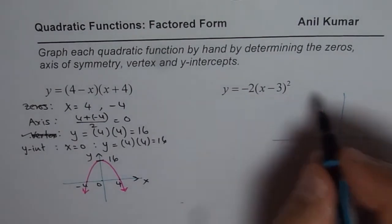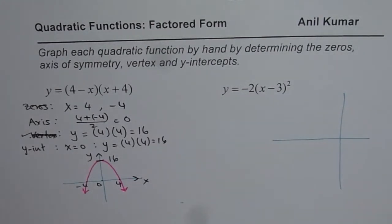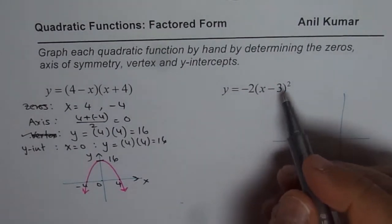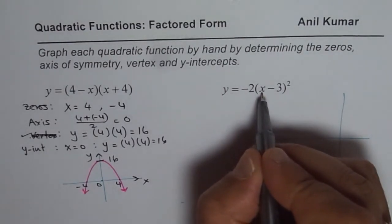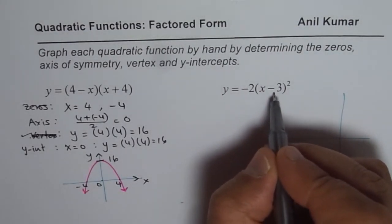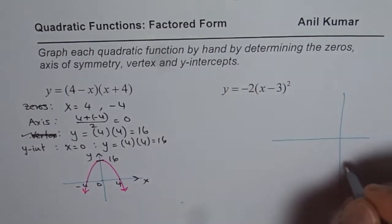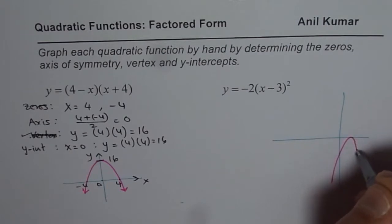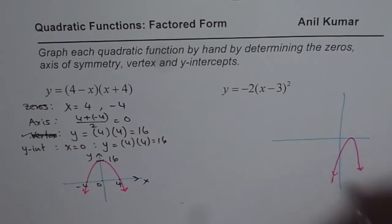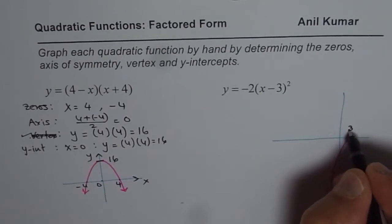The 0 for us is at x equals 3. And the y-intercept is when I substitute x equals 0, I get minus 3 squared is 9, 9 times 2 is minus 18. So y-intercept is somewhere here. So it is kind of parabola which is, let's say like this.